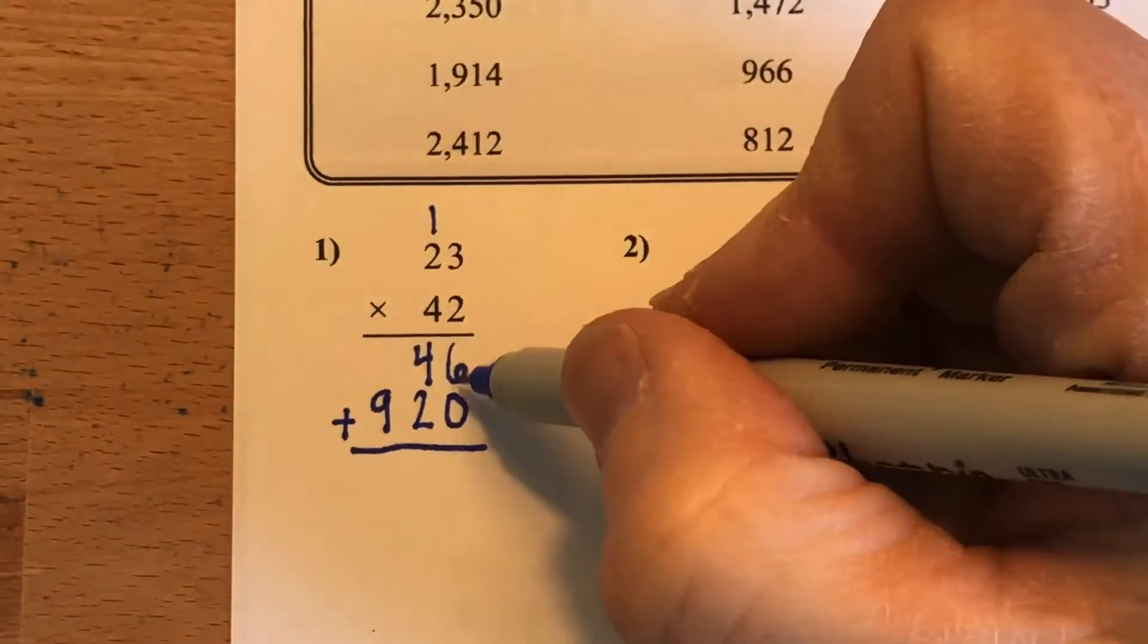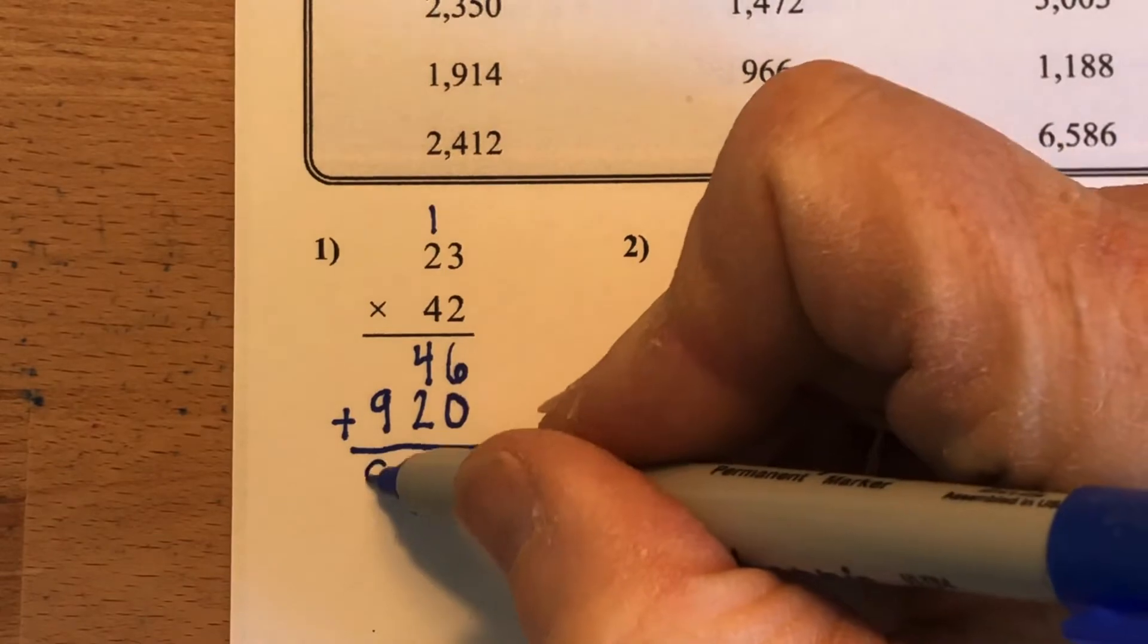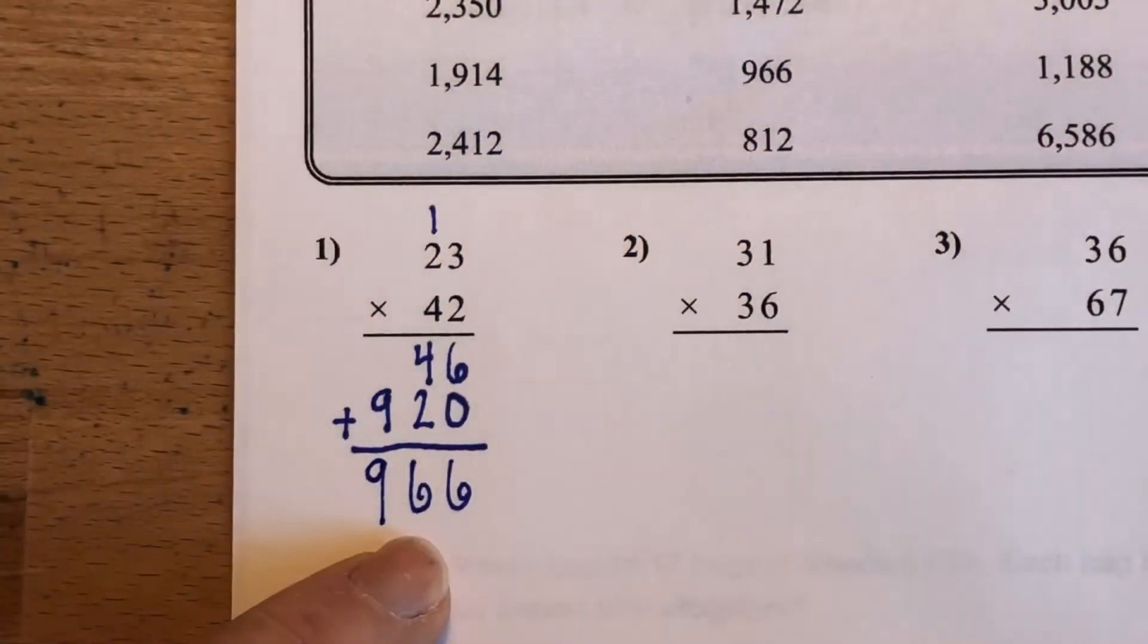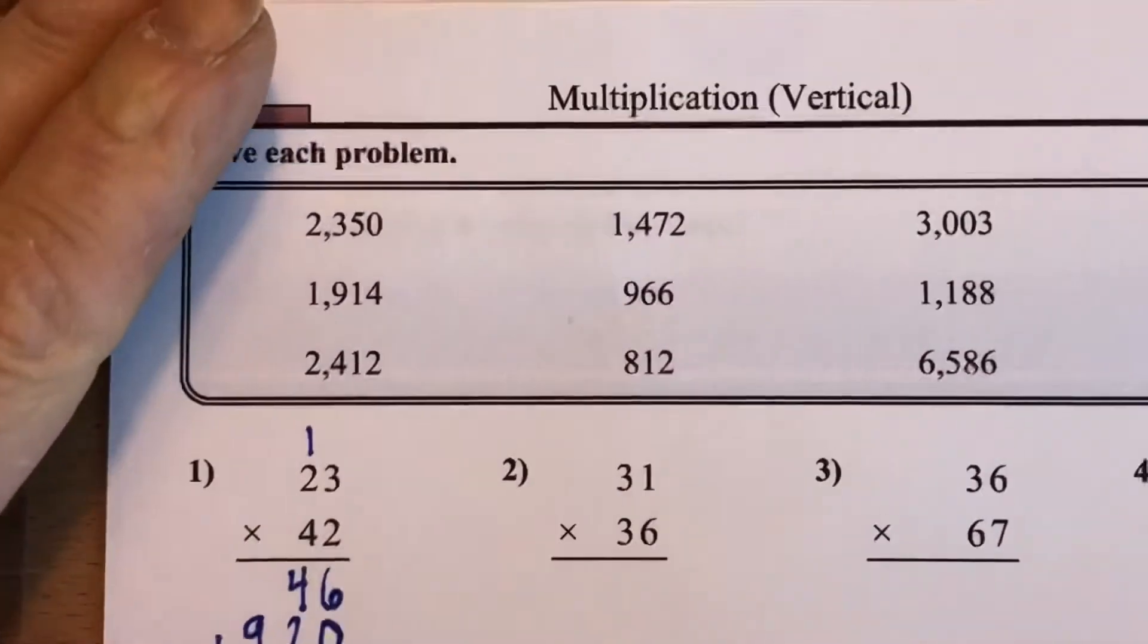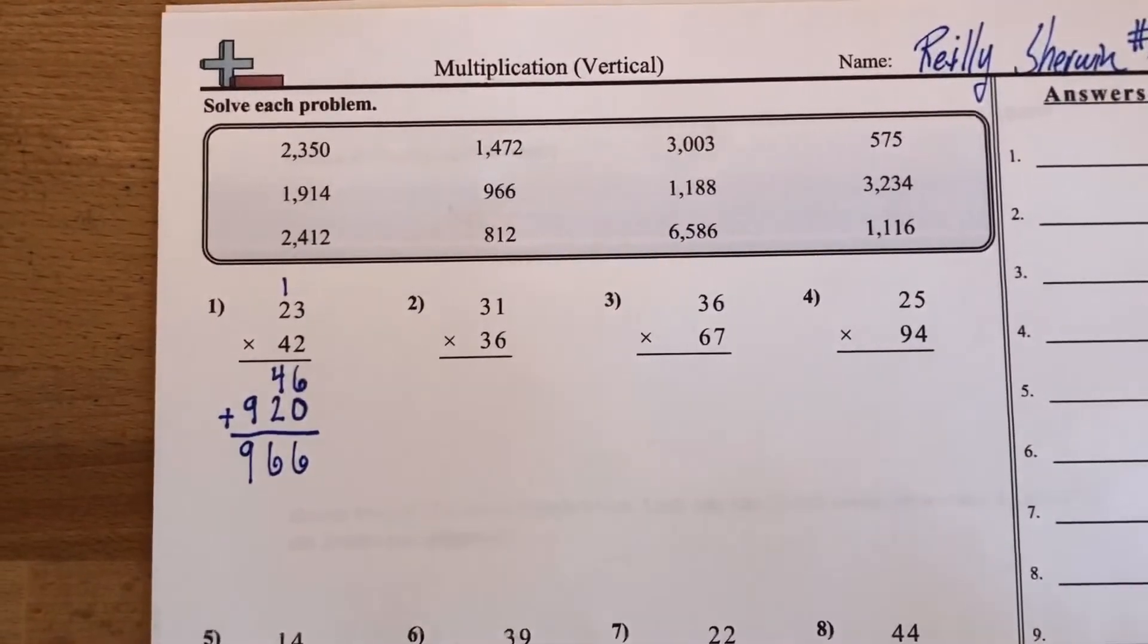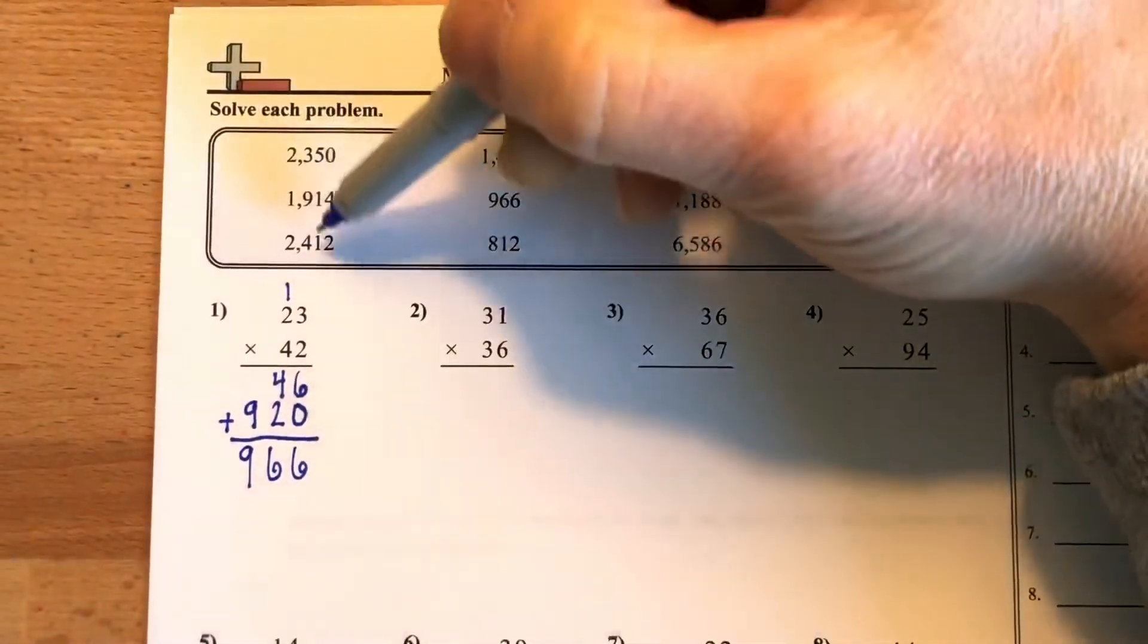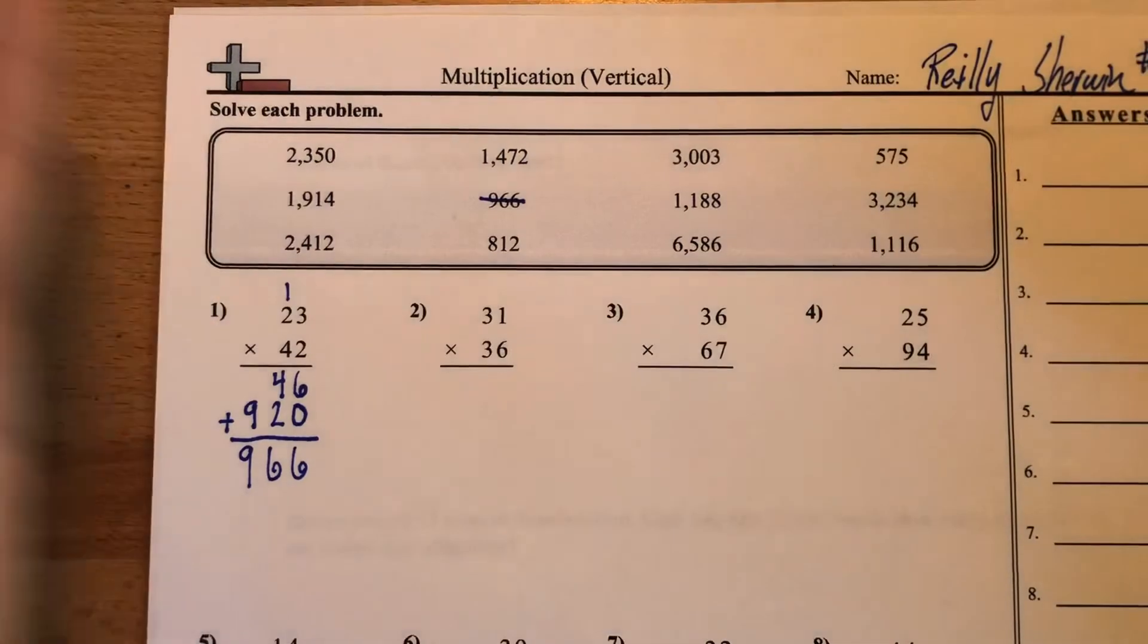Now I add them up. 6 plus 0 is 6. 4 plus 2 is 6. Plus 9. Good. So I got 966. Now I come up here and see if I can find that place value. Let me zoom out real quick so we can see that. I look around, and I see, oh, there it is right there, 966. Now I'm confident that my answer is correct.